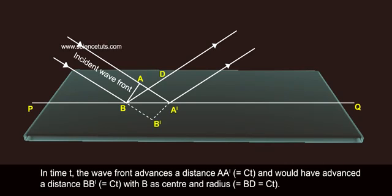In time T, the wave front advances a distance AA' equals to CT and would have advanced a distance BB' equals to CT.